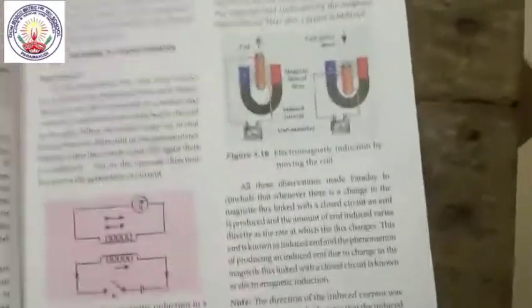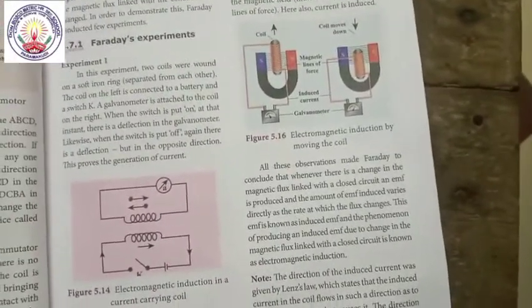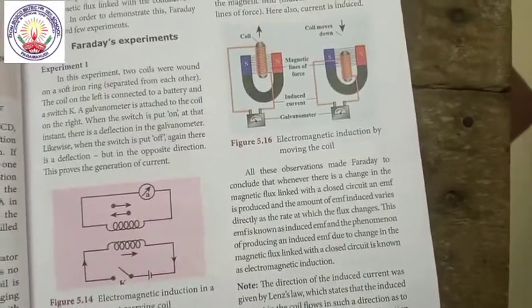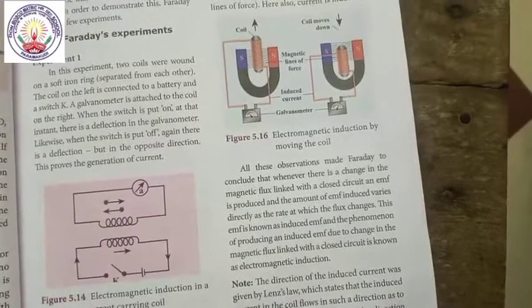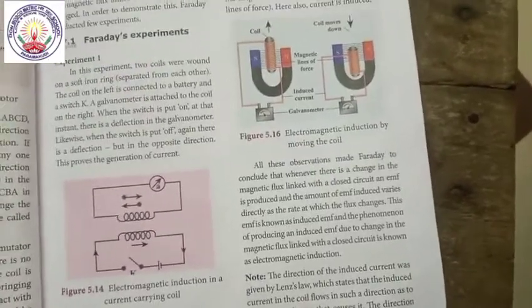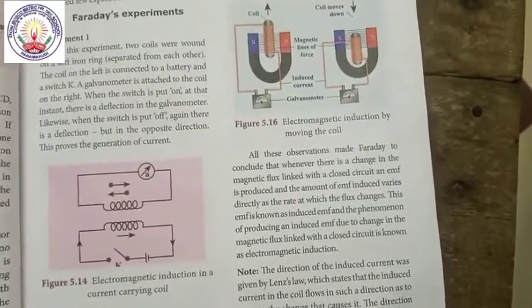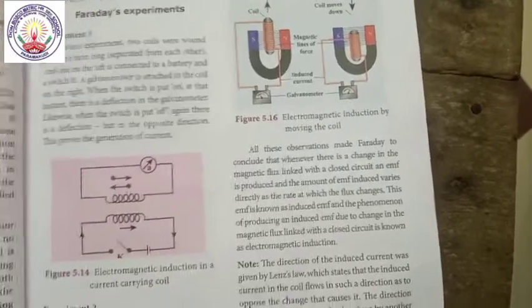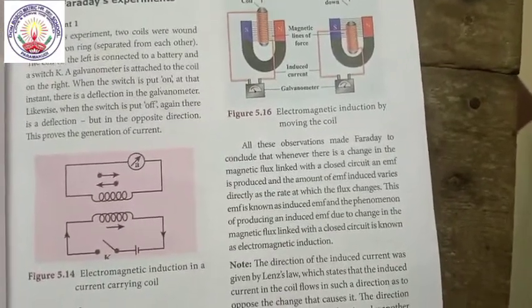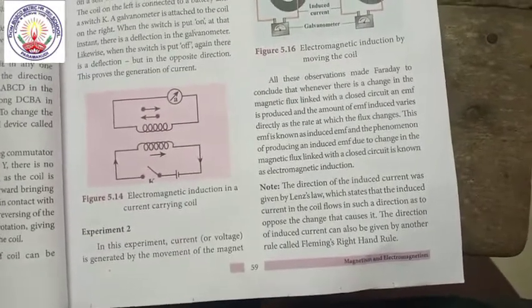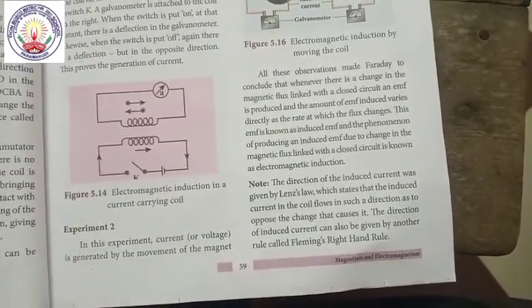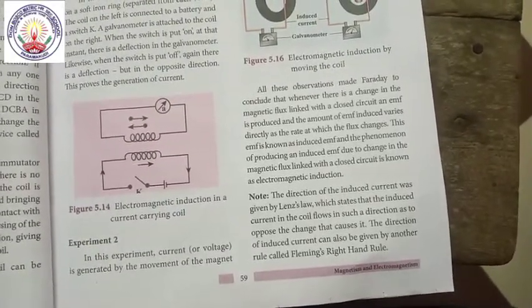All these observations led Faraday to conclude that whenever there is a change in the magnetic flux linked with a closed circuit, an EMF is produced. The amount of EMF induced varies directly as the rate at which the flux changes. This EMF is known as induced EMF, and this phenomenon is known as electromagnetic induction. The direction of the induced current is given by Lenz's law, which states that the induced current flows in such a direction as to oppose the change in flux.